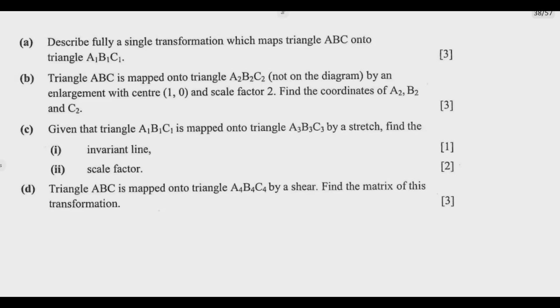Question B: triangle ABC is mapped onto triangle A2B2C2 — not shown on the diagram — by an enlargement with center (1, 0) and scale factor of 2. Find the coordinates. So the center of enlargement is not the origin but (1, 0). To find the corresponding coordinates, we use the formula when the enlargement is not at the origin. You can solve by calculation or by drawing — let's go by calculation.